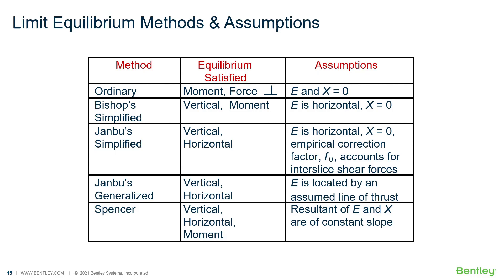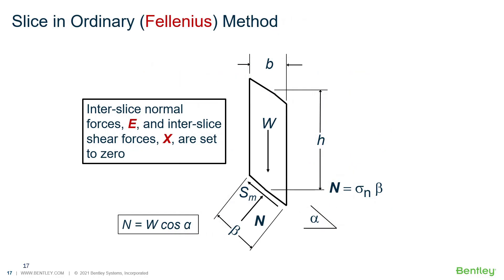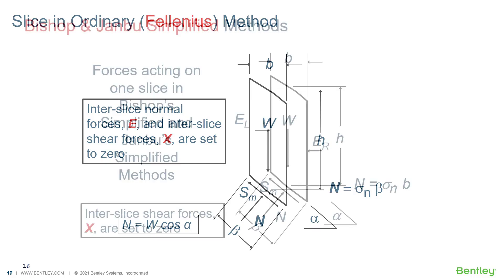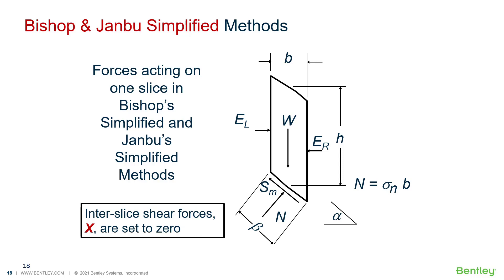We have different side force functions that resulted in different methods of analysis in the limit equilibrium method. In the Fellenius method, the inter-slice normal forces E and inter-slice shear forces are all set to zero. Your free body diagram is quite simplified, and really your weight of every slice is translated into a normal force and a shear force at the base of the slice. In Janbu and Bishop methods, we have a single normal force between our slices and no shear force — all shear forces are set to zero.